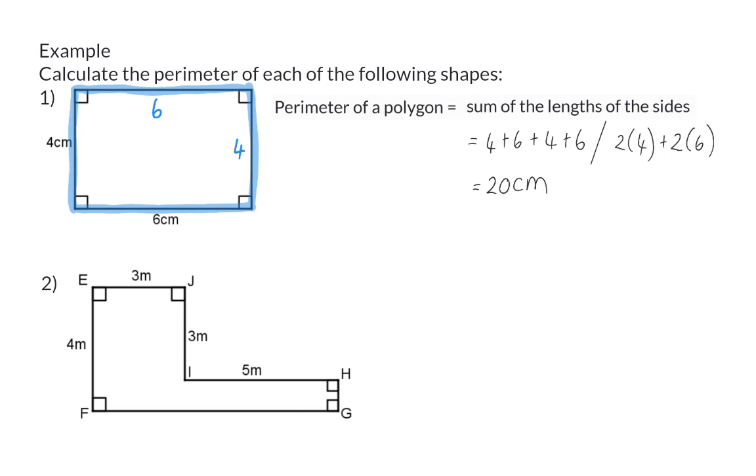In example two we have a combination of rectangles and again we need to add up all the side lengths. So starting at point H we have HI as five meters plus three plus another three and then four meters. The lengths of the final two sides are not given clearly.